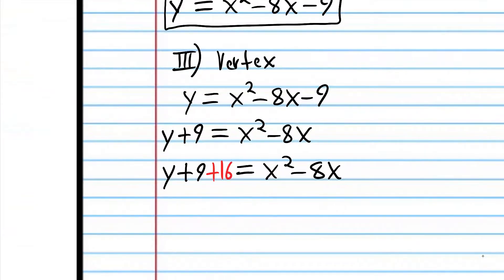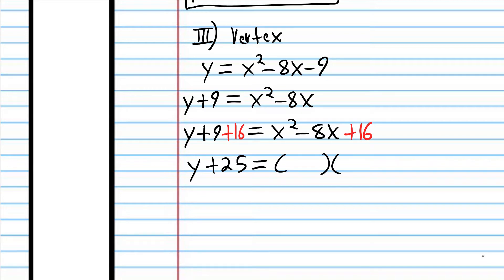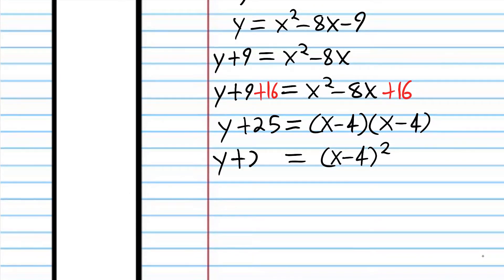This now completes the square for the expression on the right side of the equation — it's now a perfect square. We added 16 to both sides because we must add it to both sides to keep the equation true. On the left side, 9 plus 16 is 25. Over here, what two numbers multiply to 16 and add up to negative 8? That's negative 4 and negative 4 — it's a perfect square, so we write it in power notation. Now we subtract 25 from both sides, and that is vertex form.